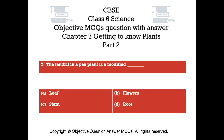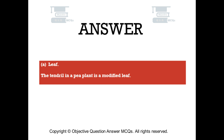Question number seven. The tendril in a pea plant is a modified: Option A leaf. Option B flower. Option C stem. Option D root. The right answer is option A — leaf. The tendril in a pea plant is a modified leaf.